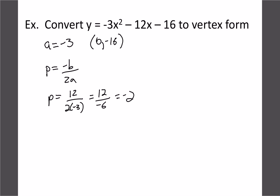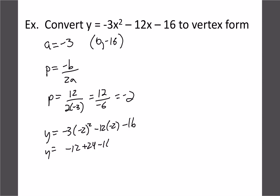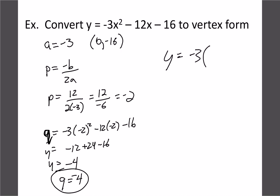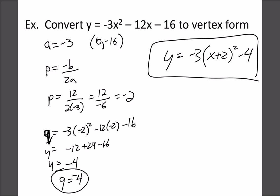This time let's plug p into the original equation to find q. So: negative 3 times negative 2 squared, minus 12 times negative 2, minus 16. That gives negative 12 plus 24 minus 16, which simplifies to negative 4. That's our q value. What we're finding is the y-value when x equals p = -2, which gives us the vertex. So our key values are a = -3, p = -2 (written as plus 2 in the formula), and q = -4.